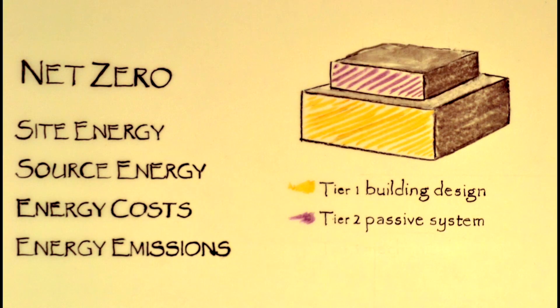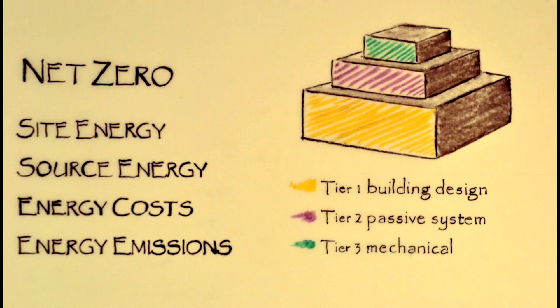Tier 2 is the second step to consider that utilizes passive heating and cooling systems adapted to the unique climate of the region. And tier 3 is a last consideration only after tiers 1 and 2 are fully satisfied, utilizing efficient mechanical means to generate and distribute energy within the building.